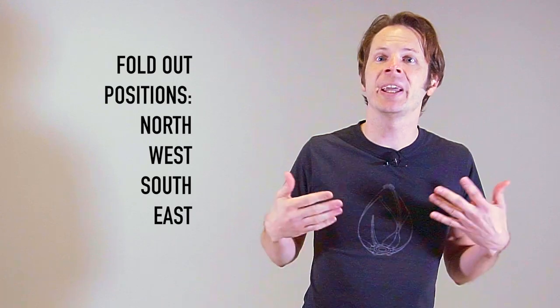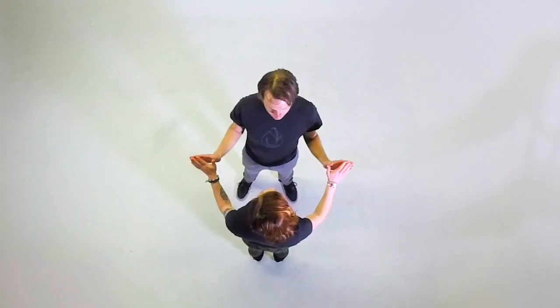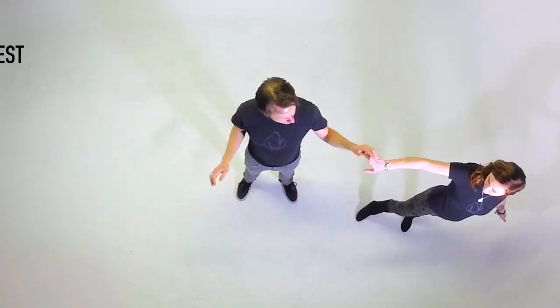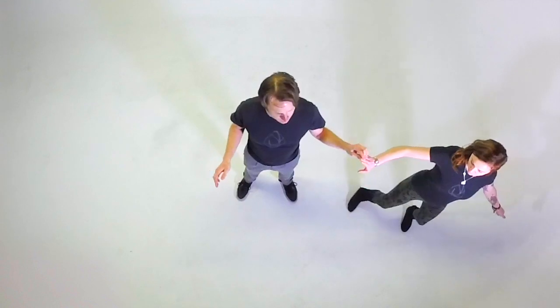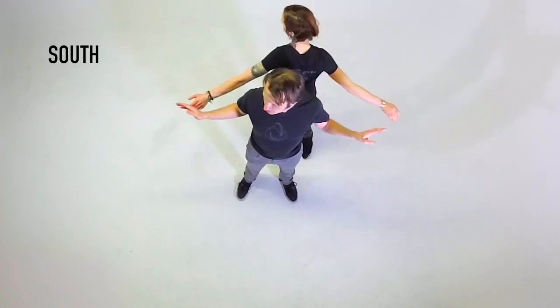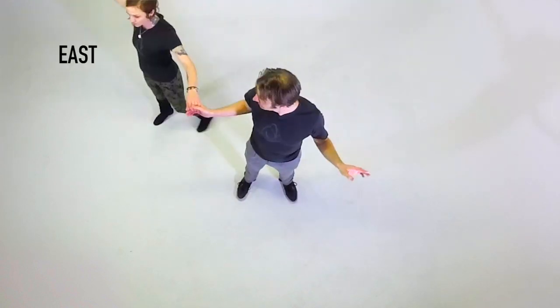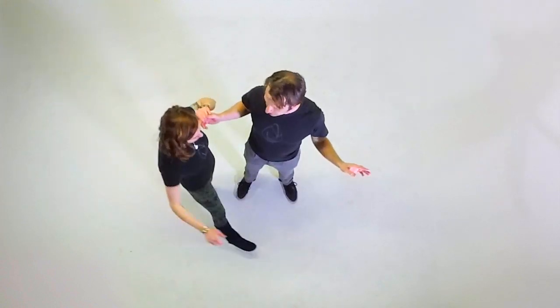For our purposes here, we'll just call them north, west, south, and east. Have the folders step through each of these points, pivoting around their hands. Go from face-to-face with your partner on the north side, facing the same direction on the west, facing away from them on the south side, facing the same direction on the east, and finally return to face-to-face on the north.